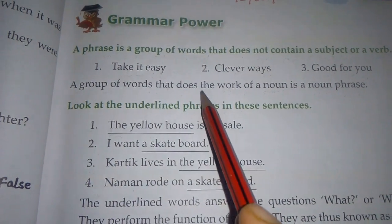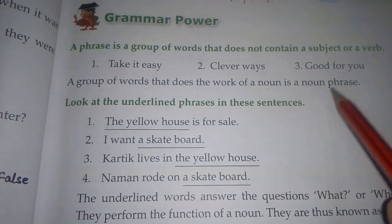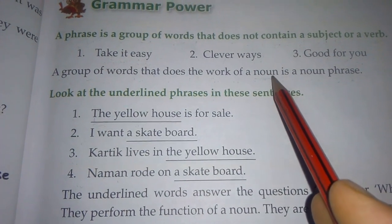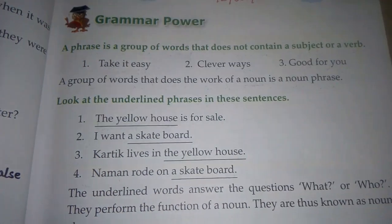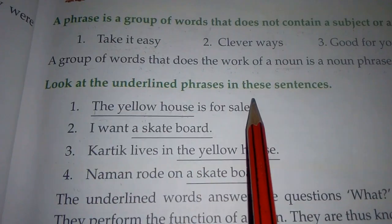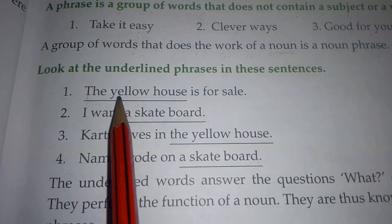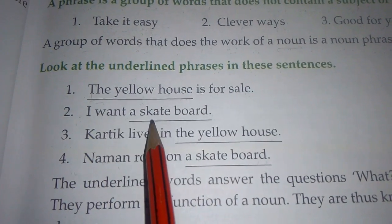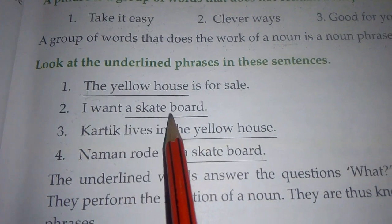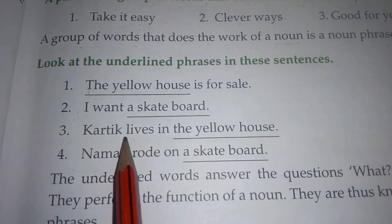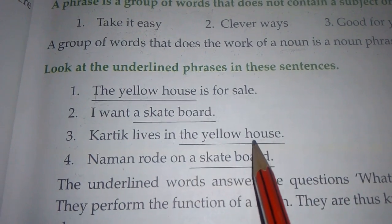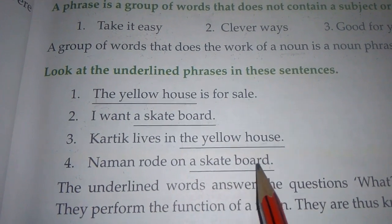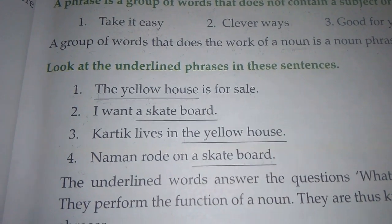A group of words that does the work of a noun is a noun phrase. वो group of words जो की noun की तरह work करते हैं उनको हम noun phrase कहते हैं. Look at the underlined phrases in these sentences. First: 'The yellow house is for sale' — 'the yellow house' is the phrase. Second: 'I want a skateboard' — 'a skateboard' is a phrase. Third: 'Karthik lives in the yellow house' — 'the yellow house' is a phrase. Fourth: 'Naman rode on a skateboard' — 'a skateboard' is a phrase.